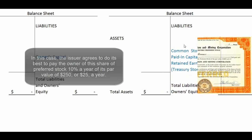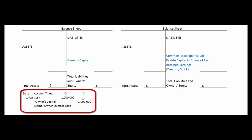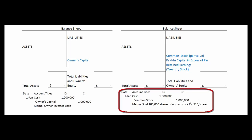Let's talk about the journal entries for a corporation compared to those for a sole proprietorship. In a sole proprietorship, we've done this entry many times: the owner invests a million dollars cash — debit cash, credit owner's capital. There's almost exactly the same entry when we sell stock to stockholders. If we're in a state that doesn't require a par value, and we sell 100,000 shares at ten dollars a share — that's a million dollars — we debit cash for a million dollars and credit common stock for a million dollars instead of owner's capital.